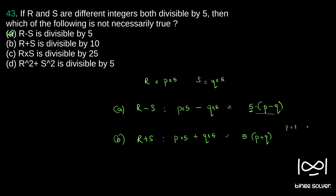For example, let P be 3 and Q be 9. Then P plus Q becomes 5 into 5, which is 25. Since 25 is not divisible by 10, unless P plus Q is divisible by 2, R plus S will not be divisible by 10. So this is not necessarily true, and our answer is B.